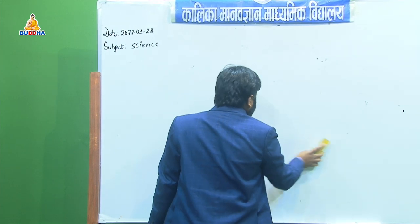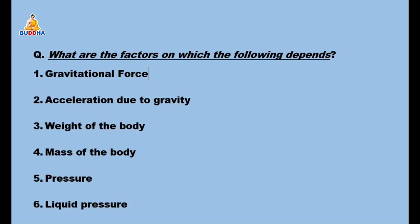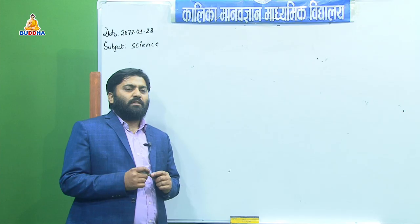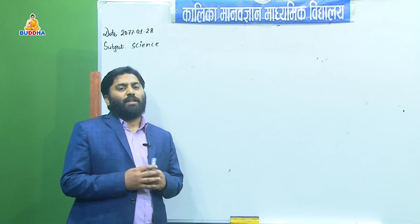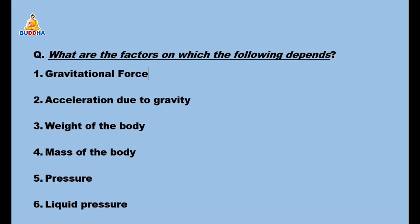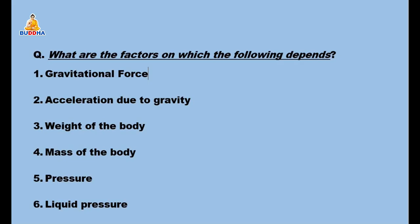We have now completed all the proofs. Now we are going to discuss the question pattern: what are the factors on which the following depend? The quantities include gravitational force, acceleration due to gravity, weight of the body, mass of the body, pressure, and liquid pressure.